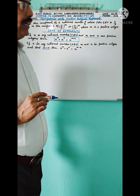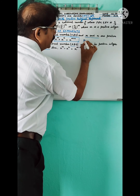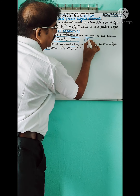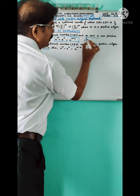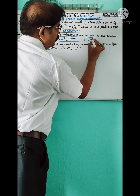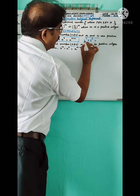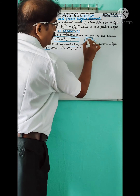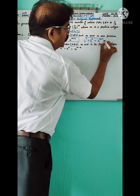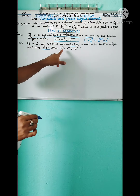For example, applying the first law: 2 to the power 3 multiplied by 2 to the power 4. Here the bases are the same, so we add the exponents: 2 to the power 3 plus 2 — wait, 3 plus 4 — equals 2 to the power 5. So when bases are the same in multiplication, we add the exponents.